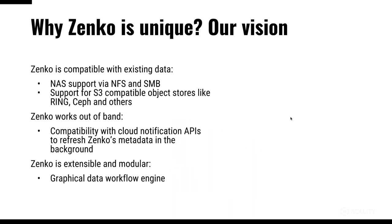What's unique about this system: it's compatible with data you have today. We can ingest data from traditional file system interfaces, support other S3-compatible storages like Ceph and others, and work in-band or out-of-band using cloud notification APIs. All your metadata is updated — some synchronously depending on how you put the data in. It's extensible and modular, and we'll talk about our plans for the future and how some of you might participate.